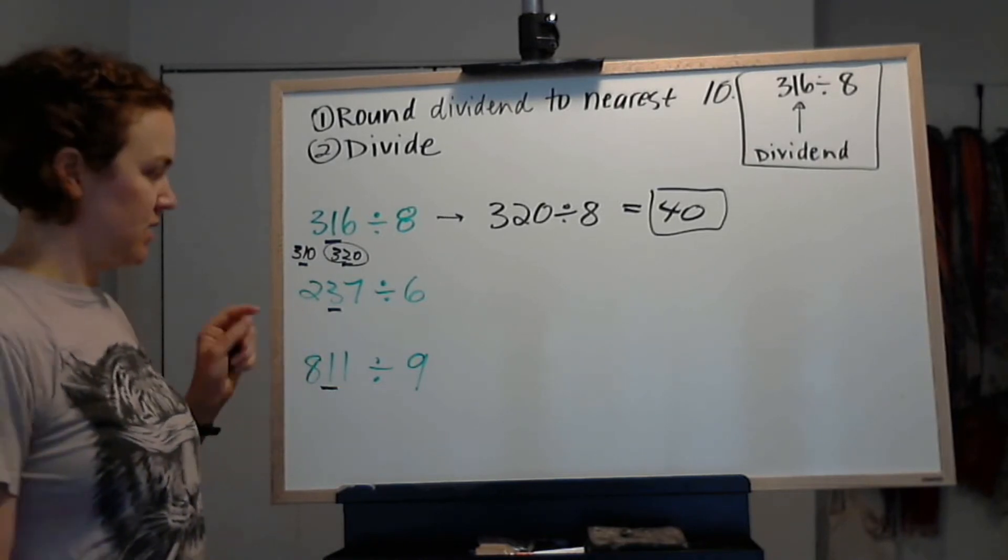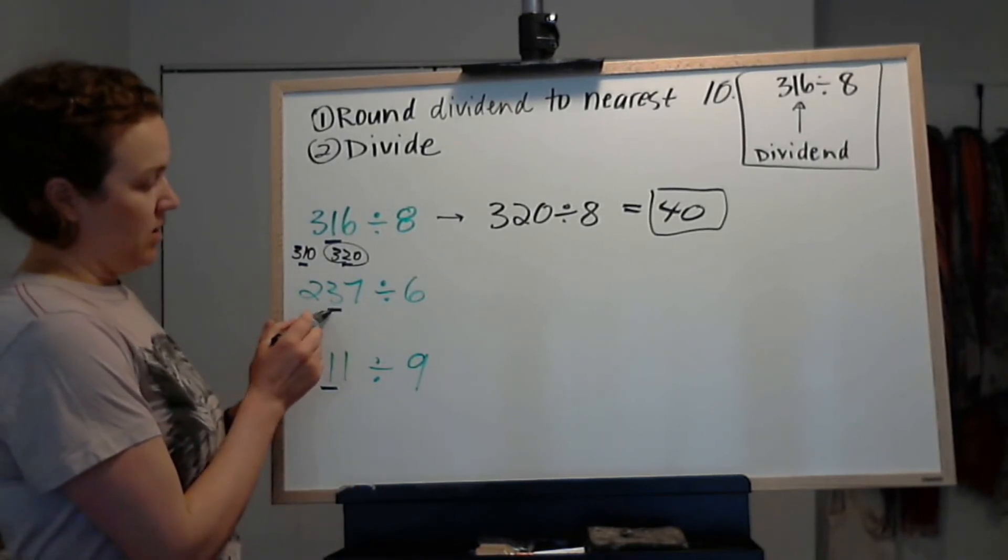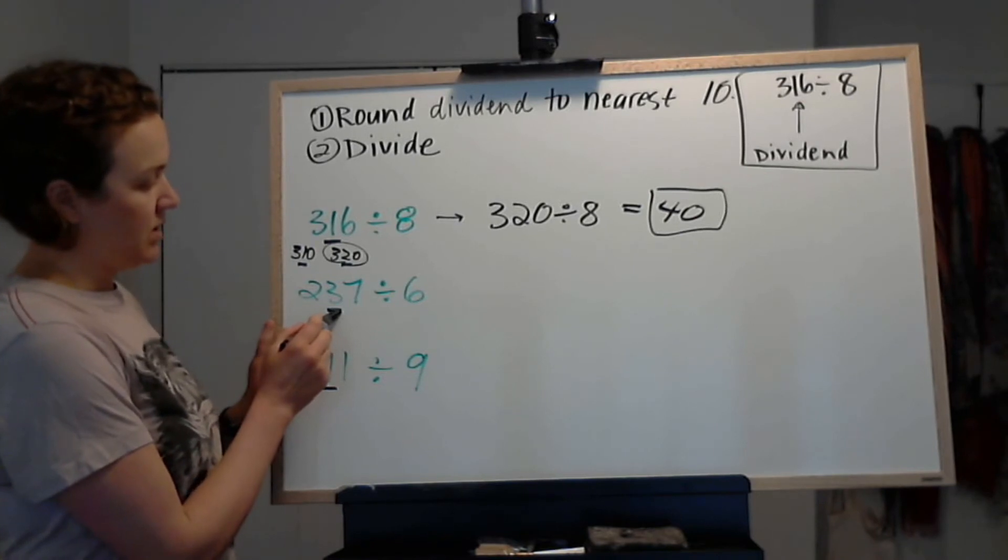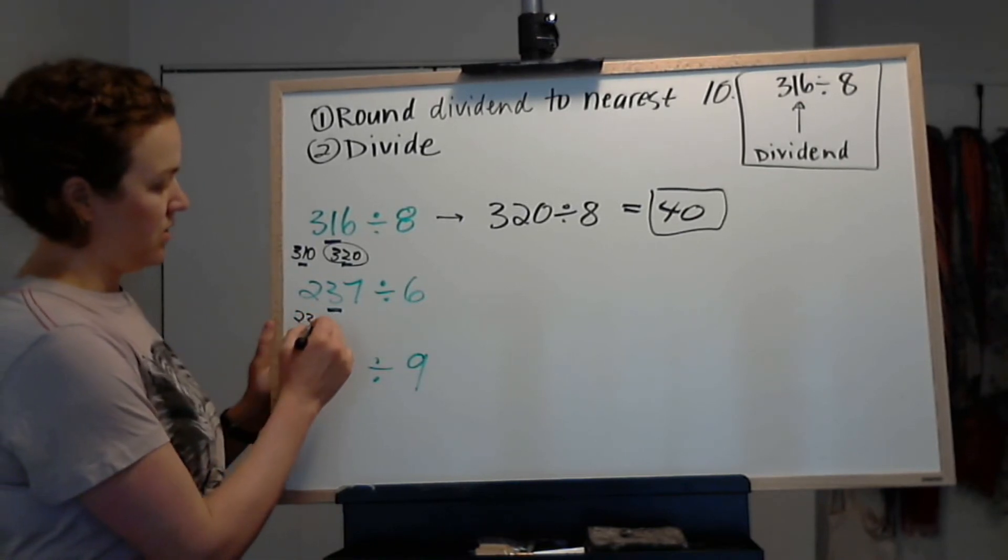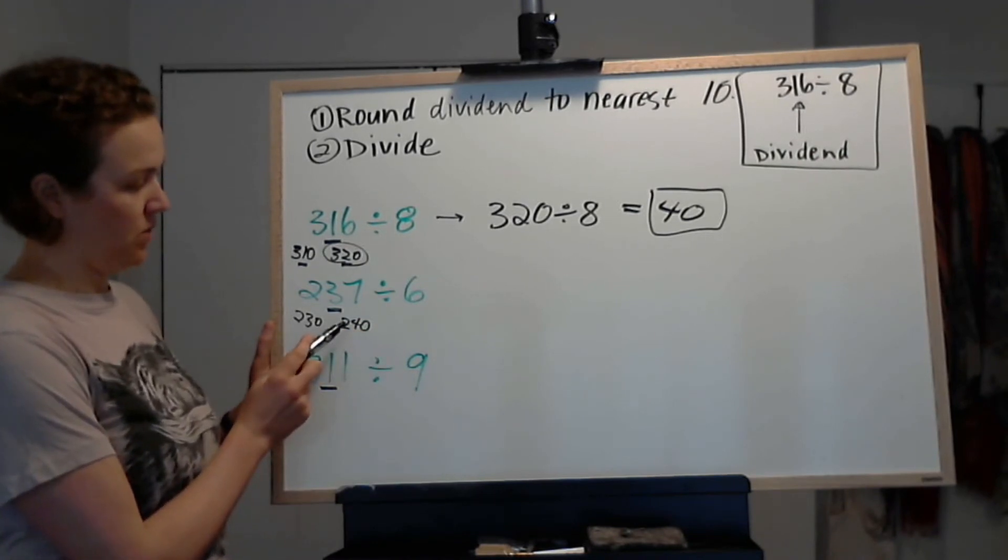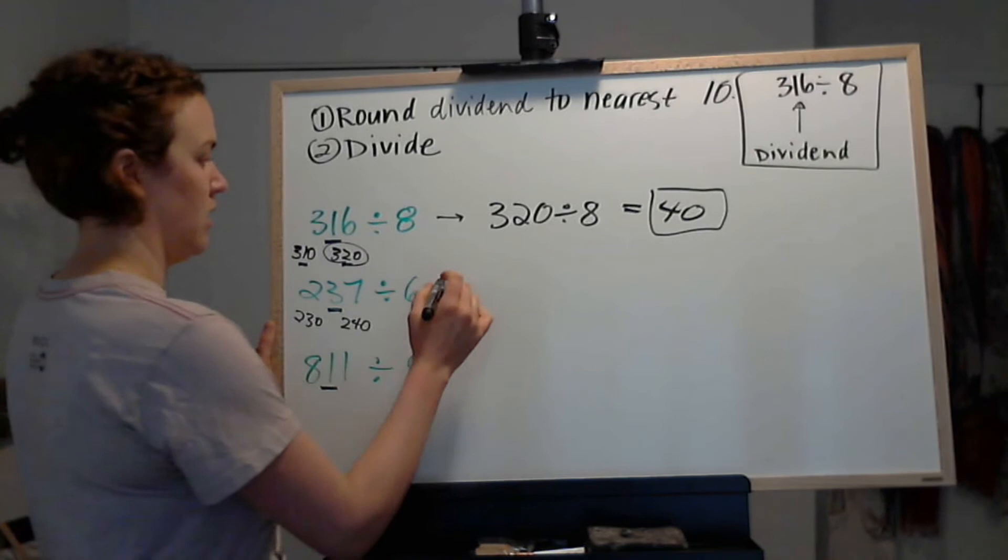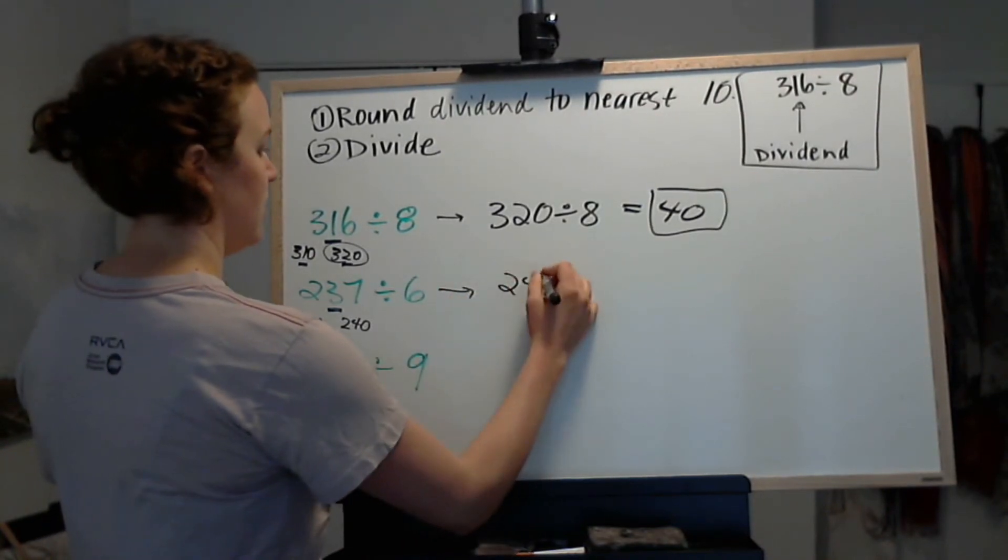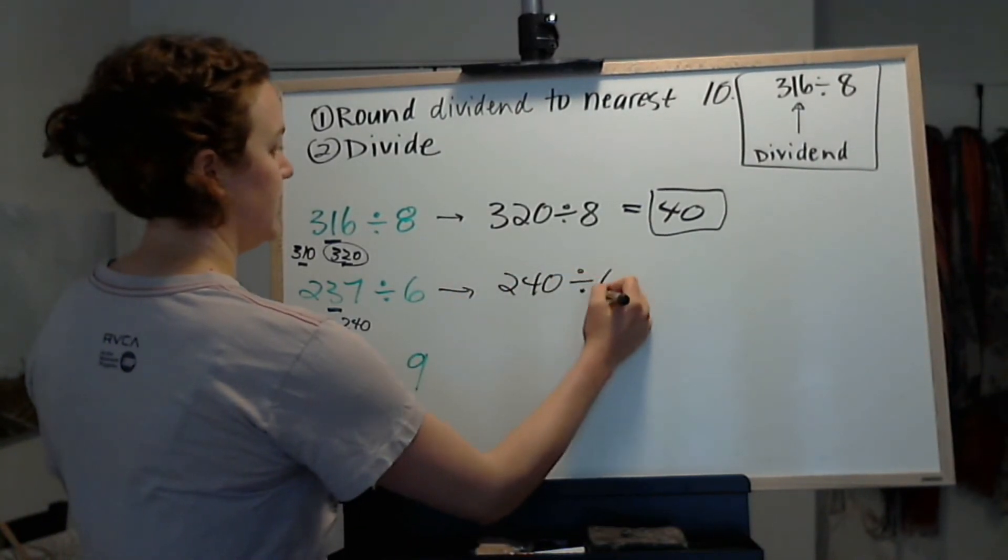237 divided by 6. Again we're rounding to the nearest 10. So is this number closer to 230 or 240? Well, it's only 3 away from 240. So we change that to 240 divided by 6.